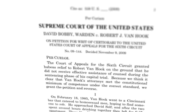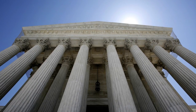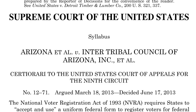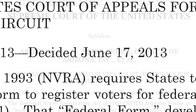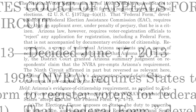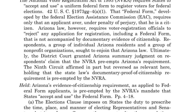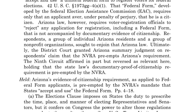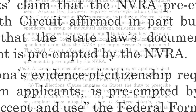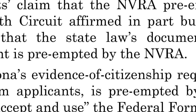A few of those are more anticipated than others. One of them was the United States Supreme Court decision in Arizona versus the Arizona Intertribal Council. On June 17, the court handed down that decision. It held that Arizona's requirements that would-be voters provide proof of United States citizenship was preempted by the National Voter Registration Act.